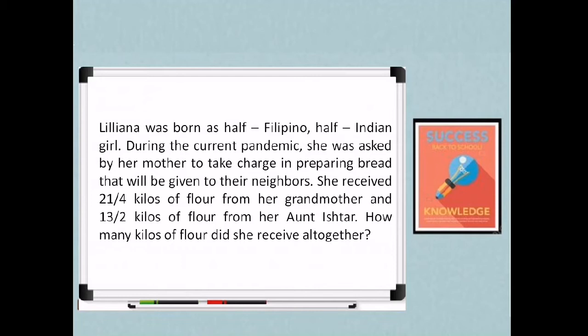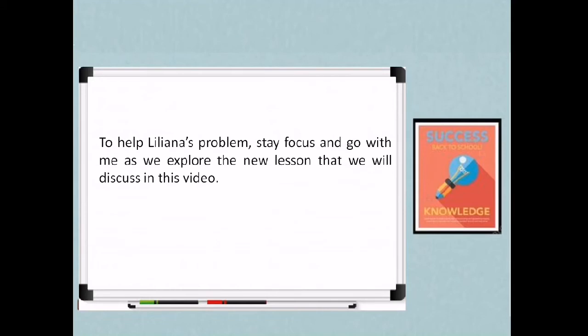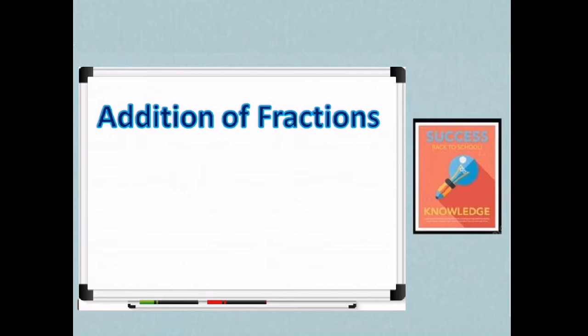Liliana was born as half Filipino, half Indian girl. During the current pandemic, she was asked by her mother to take charge in preparing bread that will be given to their neighbors. She received 21 fourths kilos of flour from her grandmother and 13 halves kilos of flour from her aunt Ishtar. How many kilos of flour did she receive altogether? So again, the question is how many kilos of flour did Liliana receive altogether? We have here the word altogether, so therefore the operation involved is addition. To help solve Liliana's problem, stay focused and go with me as we explore the new lesson.